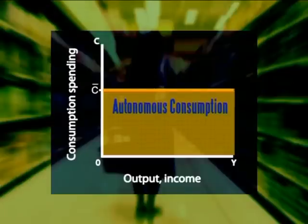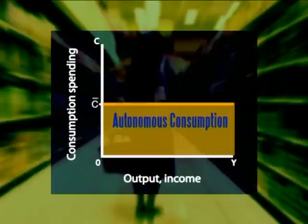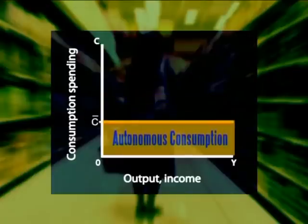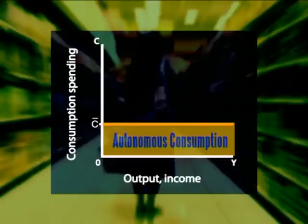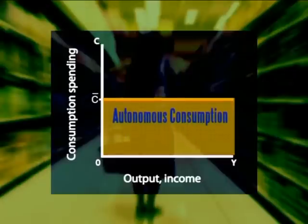For instance, an increase in household wealth, and note I say wealth, not income, perhaps because a good investment has paid off or an inheritance has come through, will cause that household to increase their autonomous spending pattern. This is indicated by a higher vertical intercept.